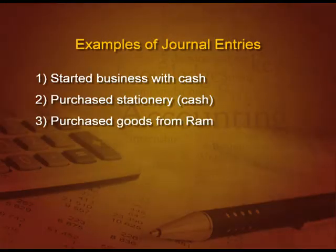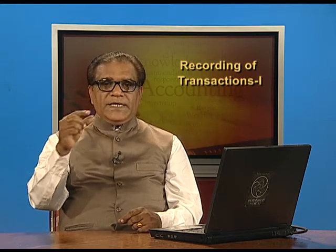Next example: Purchase goods from RAM. Goods are coming in — it is an asset, so it will be debited. RAM is the giver of these goods, so he will be credited. The entry will be: Purchase account debit, To RAM account. Note that when we purchase goods or sell goods, we use the terms 'purchase' and 'sales' rather than 'goods' — this will be discussed further in the next chapter.